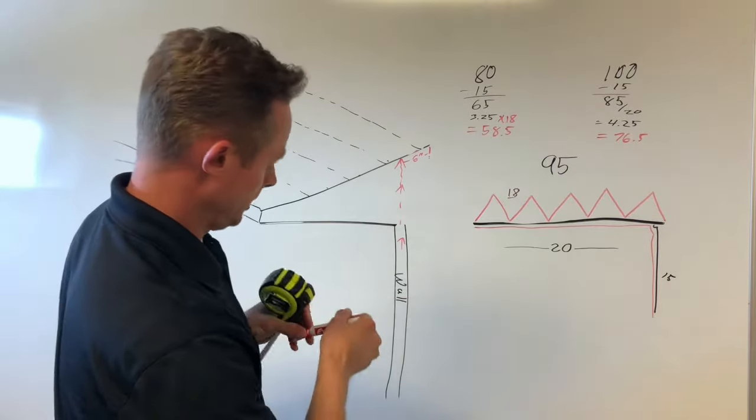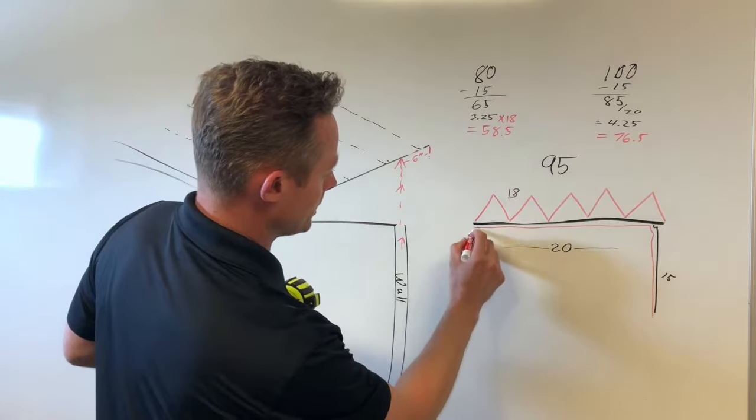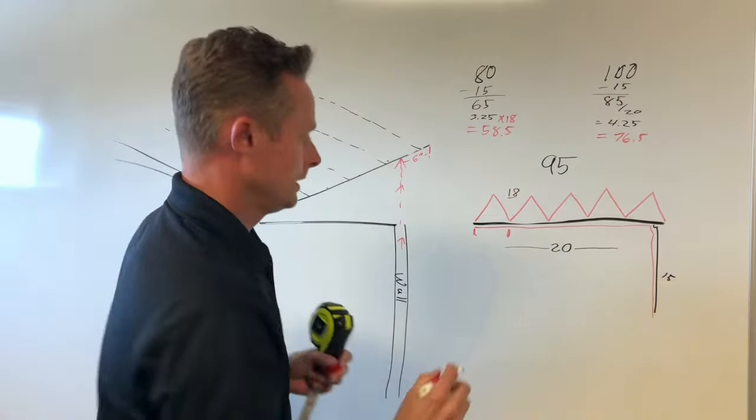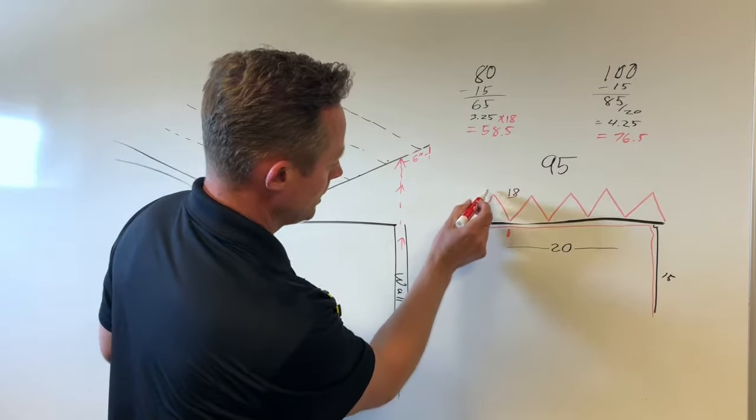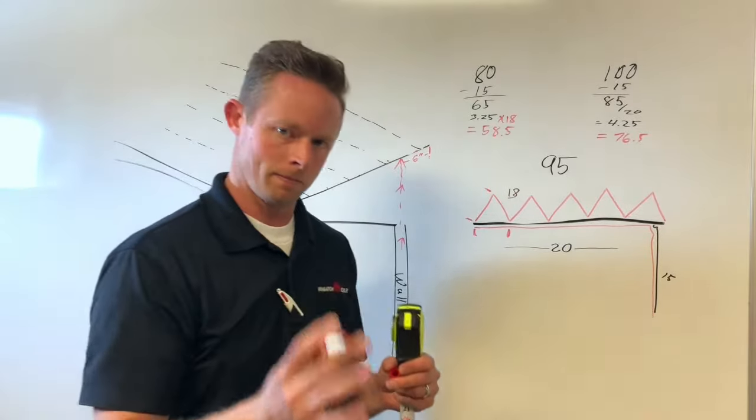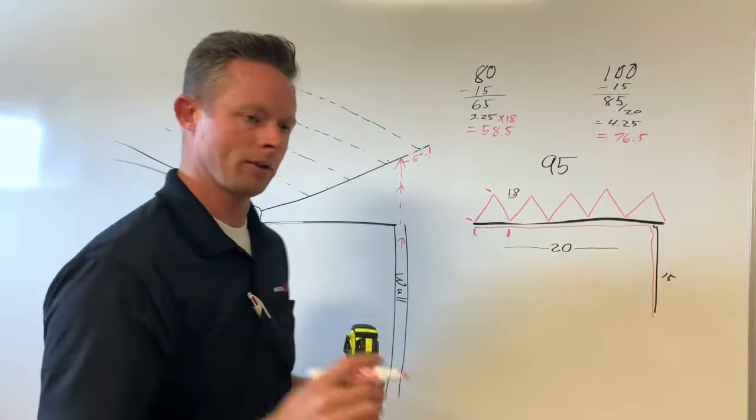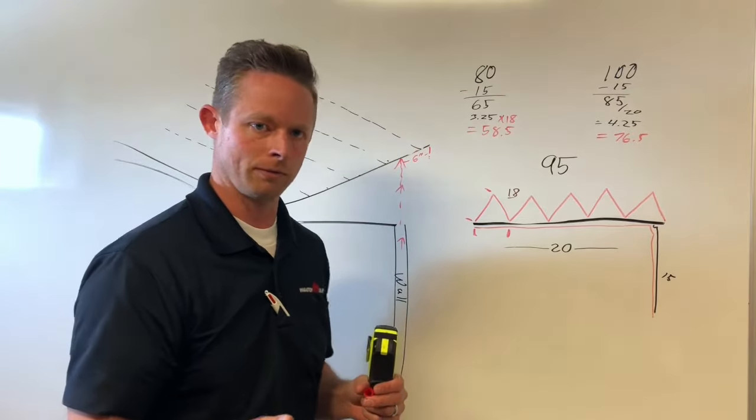You make sure that your distance on the base is always smaller than the distance to the peak. Keep that in mind. That'll keep you in an efficient zone for your cable.